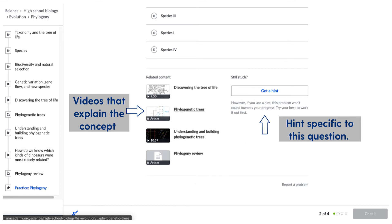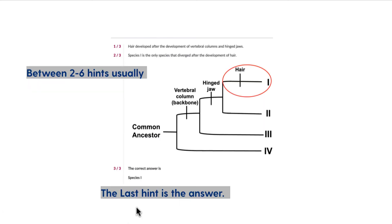For this particular question, it happens to have three hints. Normally hints are anywhere between two to six, depending upon the difficulty of the question. The last hint is the answer. This is one of the main reasons why I really like and encourage Khan Academy, because students often just need a little bit of help, and once they get that, they can take it the rest of the way — especially if you're working by yourself and not working with a teacher.